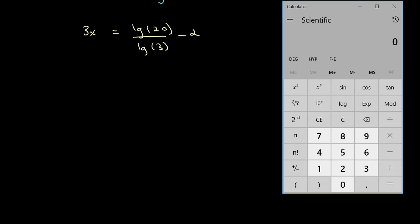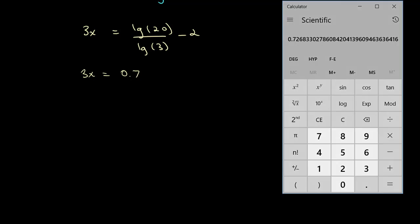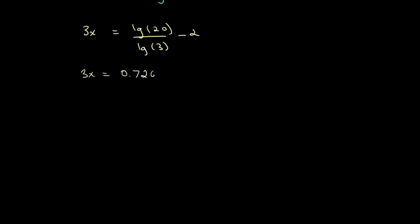Let's write log of 20. So lg of 20 divided by lg of 3 is equal to 2.72 minus 2 is equal to 0.7. So 3x is equal to 0.7. What was that again? 0.72683.